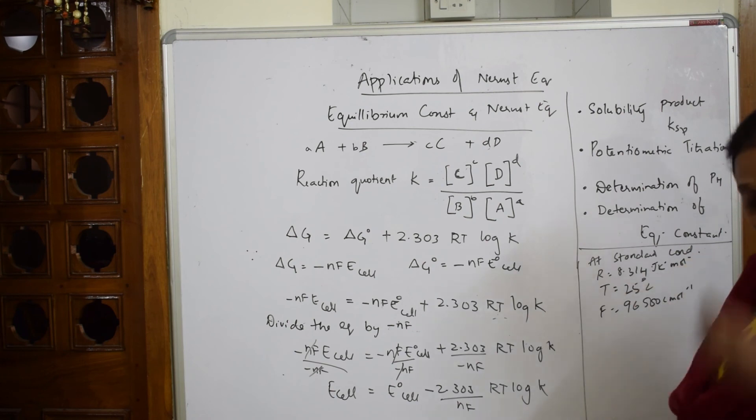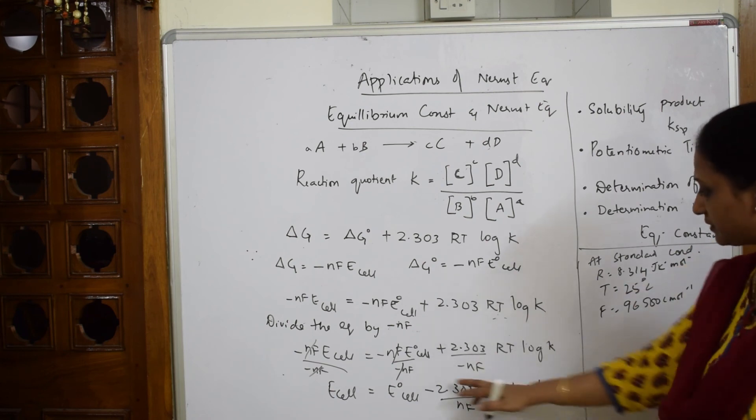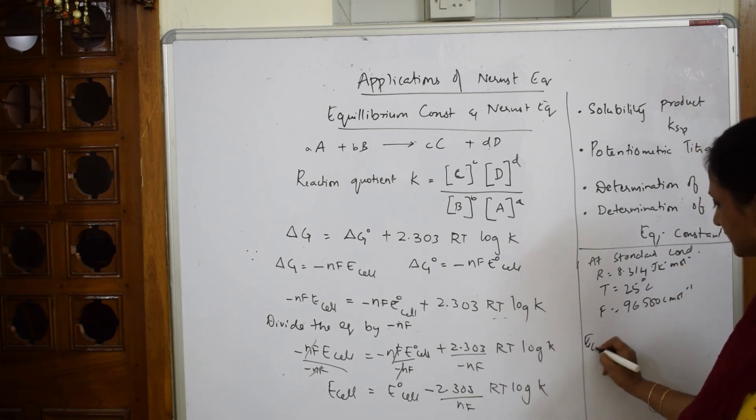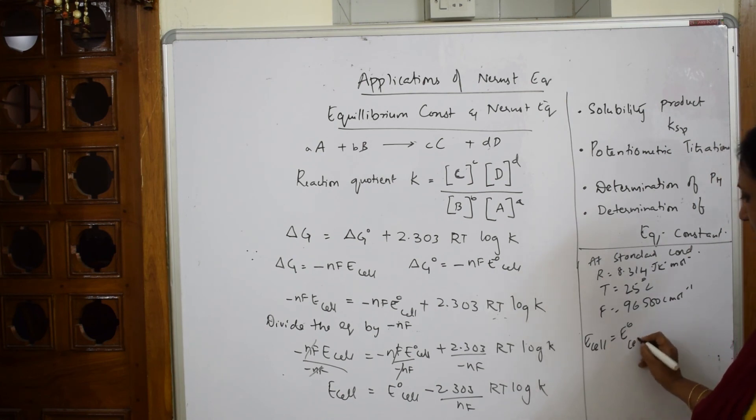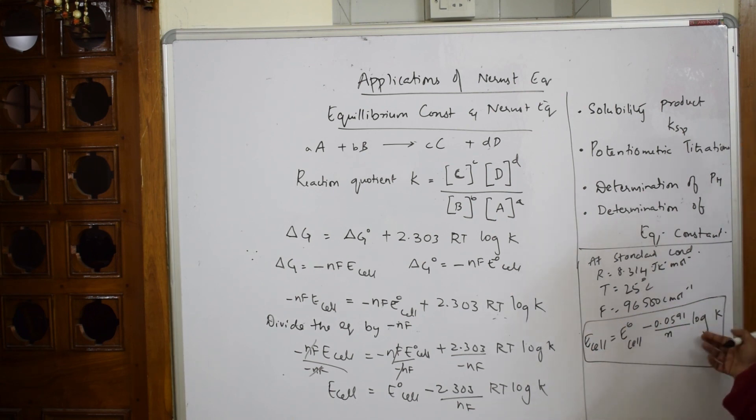Under these conditions, 2.303 if I multiply I get E cell is equal to E naught cell minus 0.0591 divided by N. So here we have not taken any number of electrons shown. So N log K. This is how I am going to denote or determine the equilibrium constant using Nernst equation.